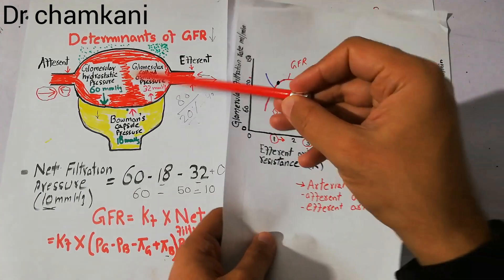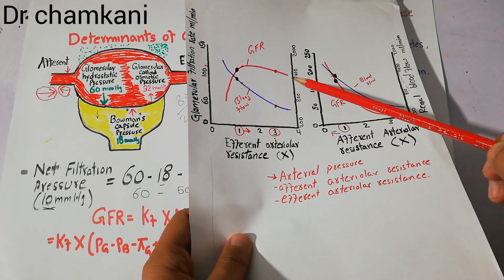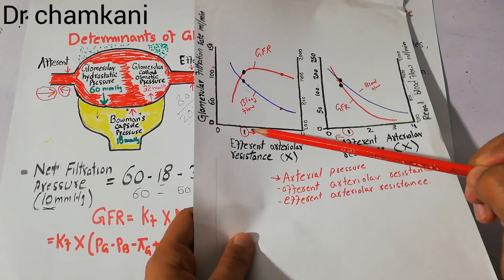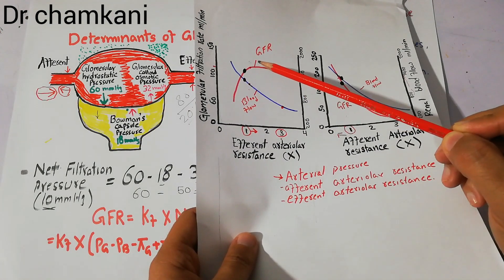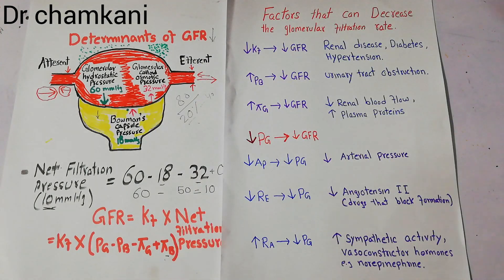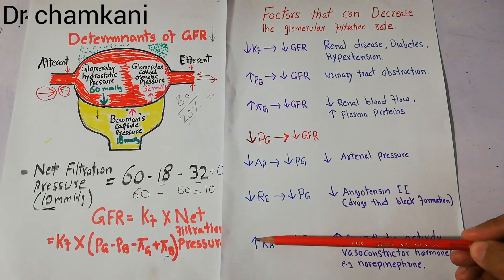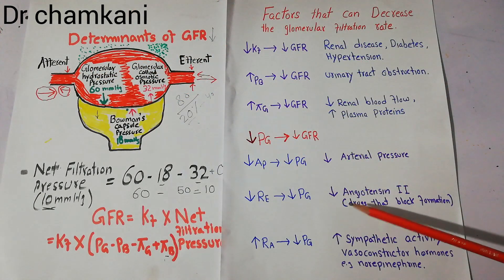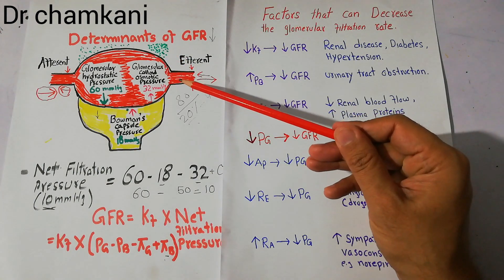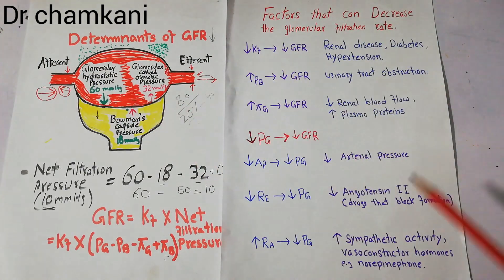If resistance at the efferent end increases too much — more than three times normal — GFR can fall back to or even below normal. But initially, with a slight increase in efferent arteriolar resistance, GFR increases above normal. So at the efferent end, a decrease in resistance decreases GFR, while at the afferent end, an increase in resistance decreases GFR. In summary, decreased efferent arteriolar resistance is caused by decreased angiotensin 2, while increased afferent arteriolar resistance is caused by sympathetic activity or vasoconstrictor hormones like norepinephrine.